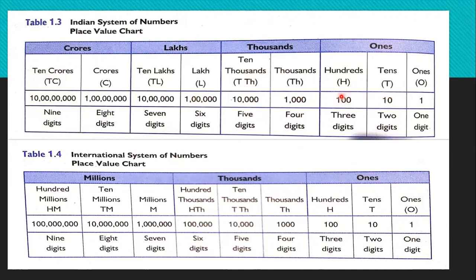Now, if we discuss about the international system, in this system the chart is divided into periods and each period has three digits. The different periods are ones period, thousands period, and millions period. The ones period consists of ones, tens, and hundreds. The thousands period consists of thousands, ten thousands, and hundred thousands. The millions period has millions, ten millions, and hundred millions.